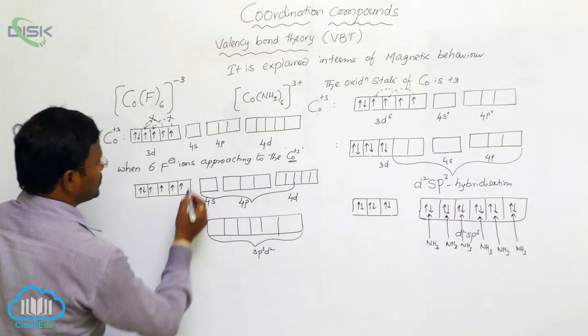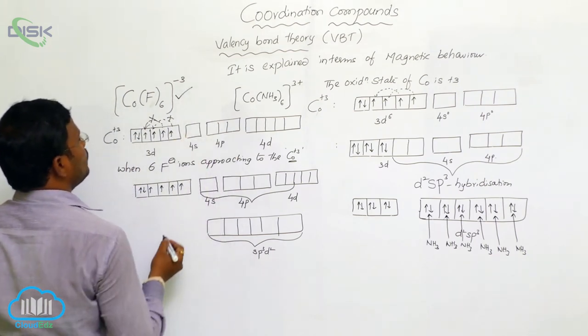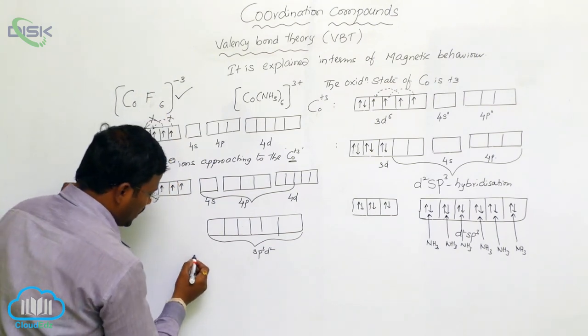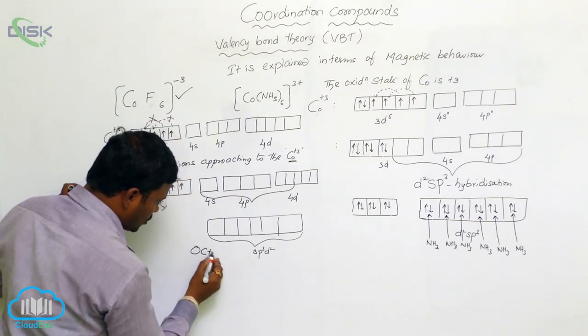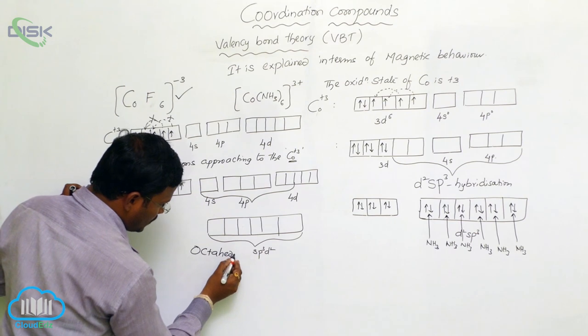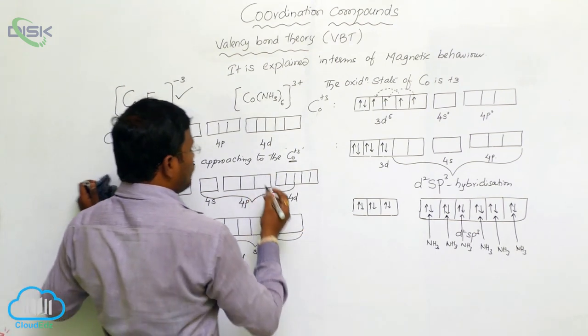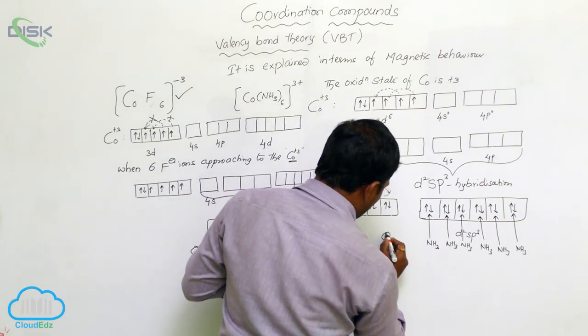So, due to sp3d2 hybridization, it is going to form CoF6, CoF minus 3 complex with octahedral geometry. So, in both conditions, geometry is same. CoF6 complex octahedral.